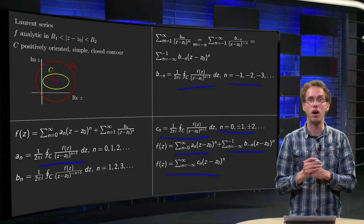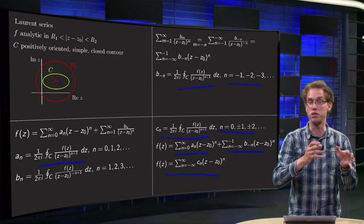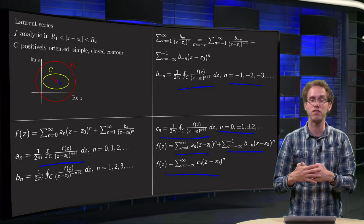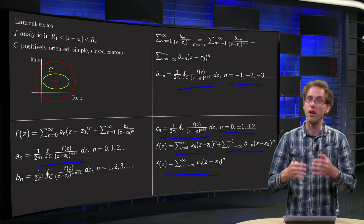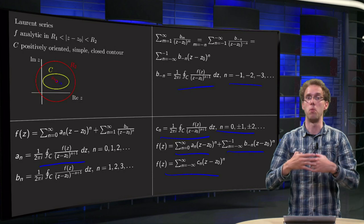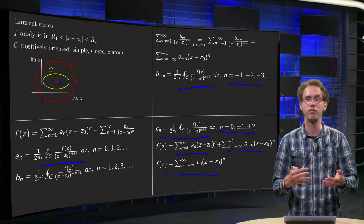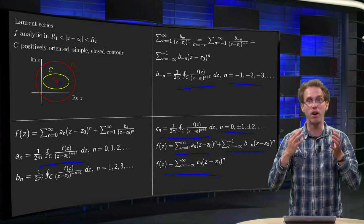So that is what the Laurent series is. It is a Taylor series, but now it also contains a principal part with all kinds of negative powers. You might wonder why this is true. You might wonder how to find Laurent series of different functions. Well that is all subject of our next videos.